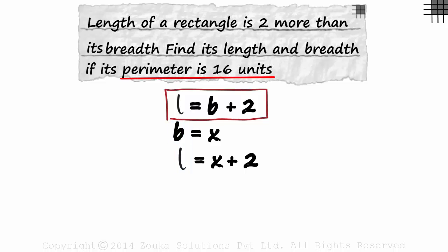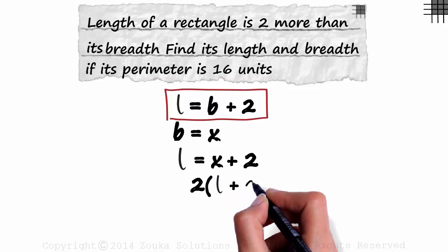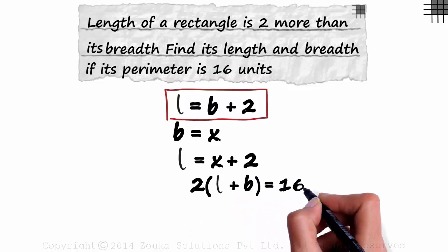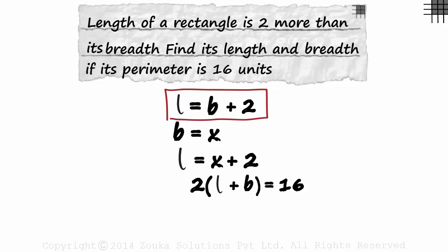The perimeter is given to us as 16 units. So twice L plus B will equal 16 units. Yes, the perimeter is 2 times the length plus 2 times the breadth. As L is X plus 2 and B is X, we get this equation.